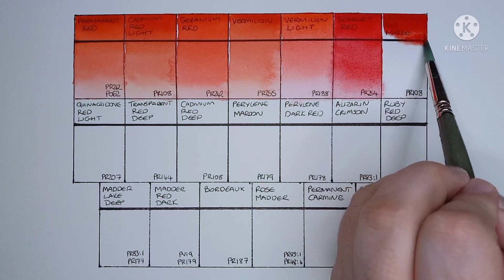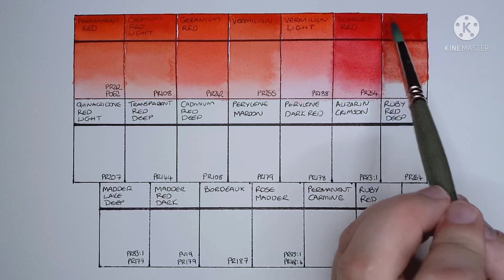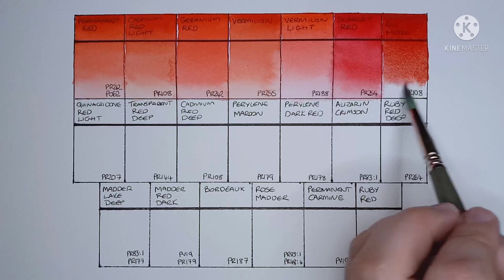And the final paint on this top row is cadmium red middle. And it's another PR108. Yeah, it's a very nice cadmium. I do like a cadmium red middle. This one has quite an orange undertone, and I think I can see some granulation going on as well, though that might disappear by the time it's dry.